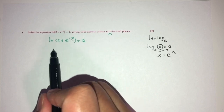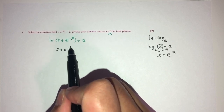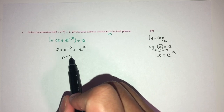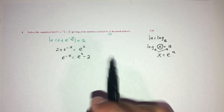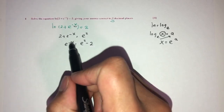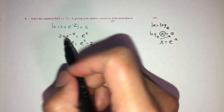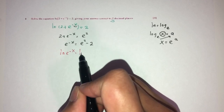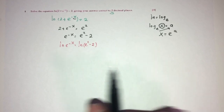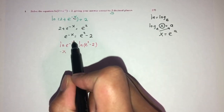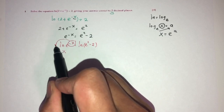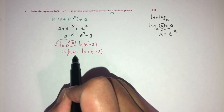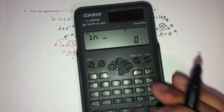Similarly, to find the value inside here, I have to send the base over: 2 plus e^(−x) has to equal e squared. Now I have to make e^(−x) the subject, so e^(−x) equals e² minus 2. Since x is up as a power, I want to bring it down by applying ln on both sides. So ln(e^(−x)) equals ln(e² − 2), and this becomes −x by the laws of logarithms. We also have ln(e), and ln(e² − 2) on the right. ln(e) becomes just 1.